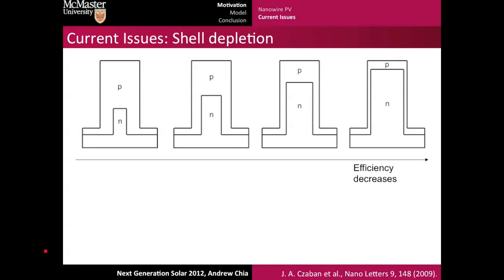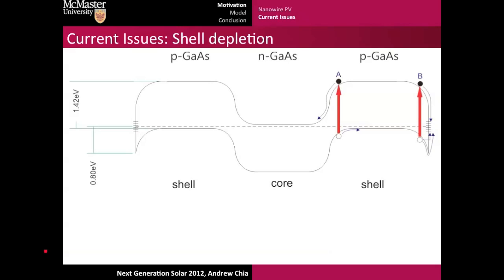So what are some current issues that nanowires face today? One of the big issues is that we found that if we decreased the shell thickness but kept the overall size of the nanowire the same, the efficiency would decrease. The main probable cause for this was the complete depletion of the shell due to surface states.